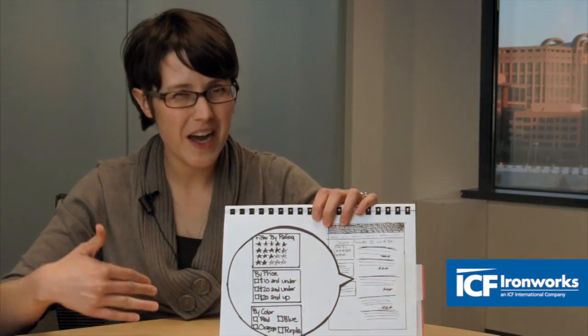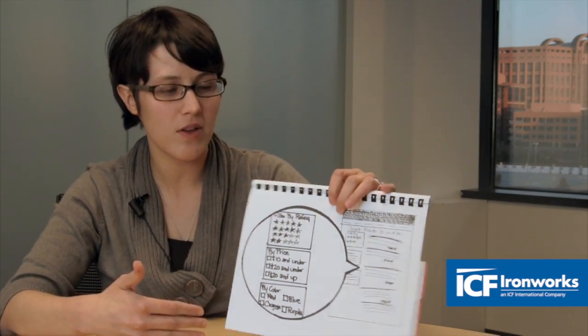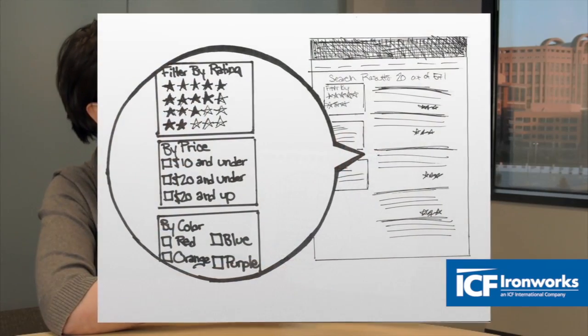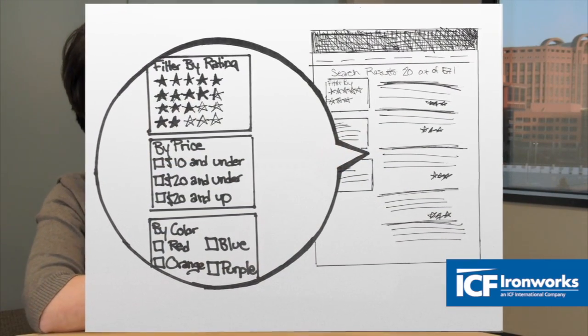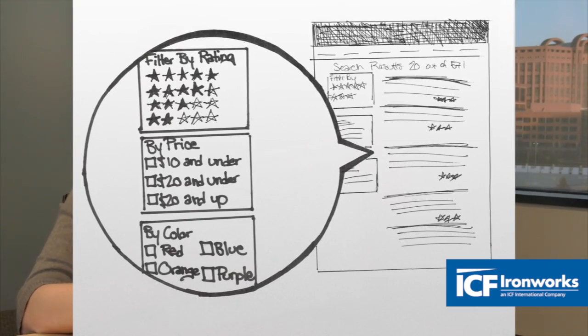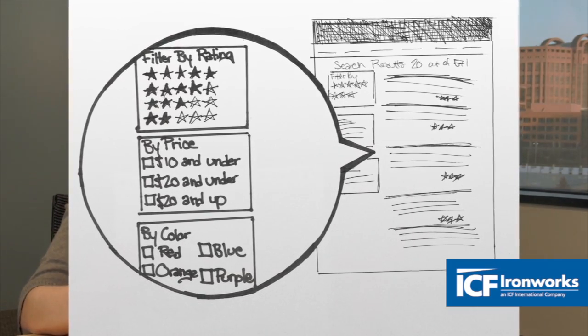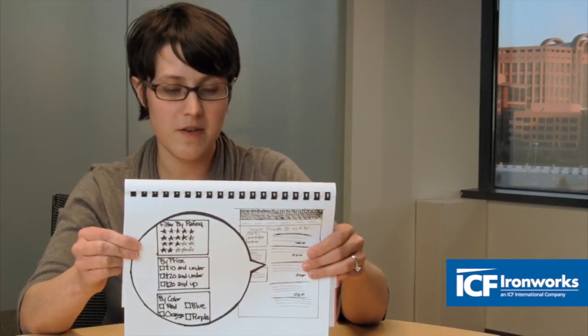Once the user runs a search and gets their results, you might want to help them narrow down how many hits they get, especially if you have a lot of content. Here we have a search results page where you can filter by rating, color, or product, depending on the content available on your website.